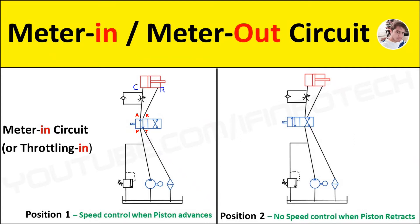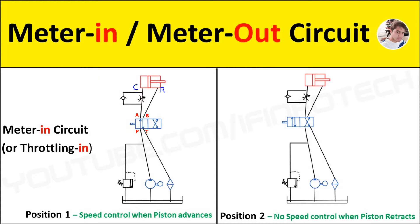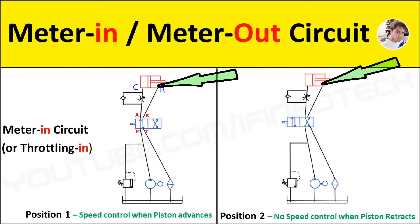Hello everyone. In this video I will show you the working of speed control circuits. Speed control circuits are of three types: meter-in circuit, meter-out circuit, and bleed-off circuit. In this video we are going to see meter-in and meter-out circuits. The speed of actuators, cylinders, or motors can be controlled using flow control valves. Varying the rate of flow of oil will vary the speed of actuators. In a meter-in circuit, the rate of flow of oil is controlled at the inlet of actuators, and in a meter-out circuit, the rate of flow is controlled at the outlet of actuators.